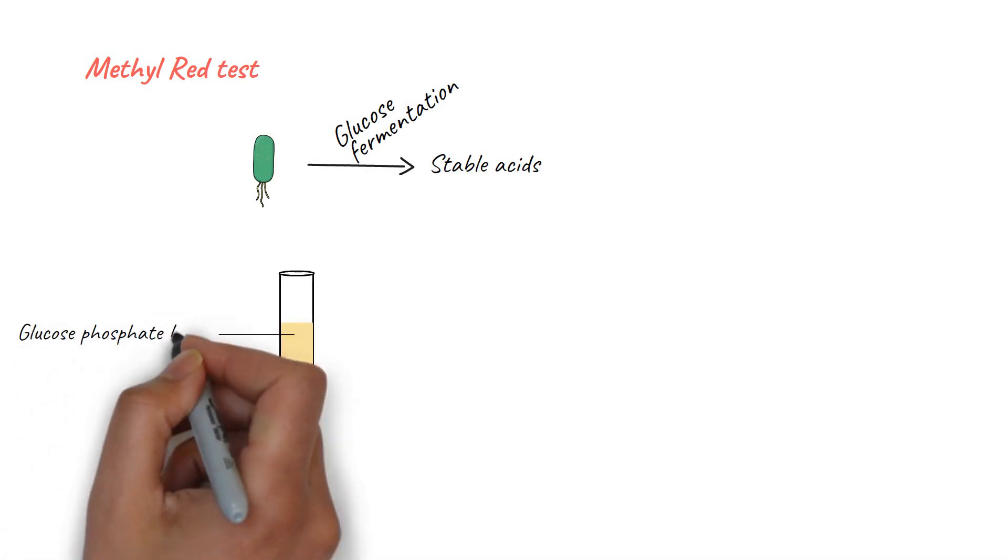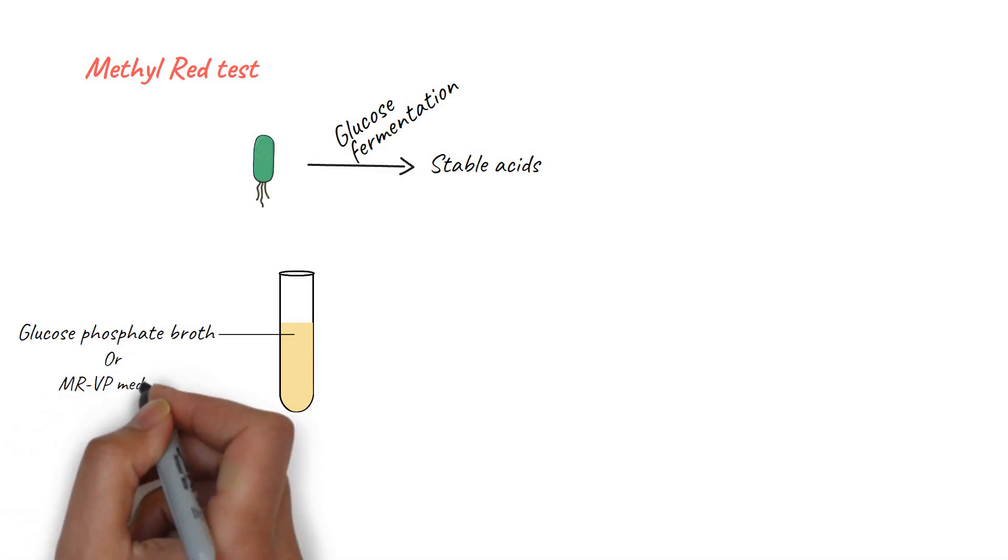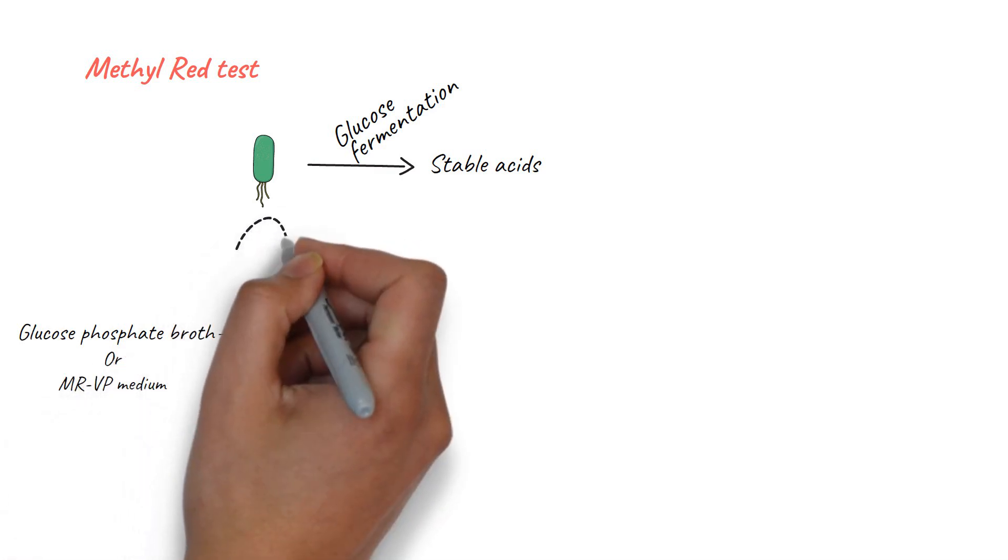The purpose of the methyl red test is to determine the ability of bacteria to produce and maintain stable acids from glucose fermentation. To perform this test, take a test tube containing glucose phosphate broth or MRVP medium. Inoculate the tube with a loopful of sample and incubate for 24 hours at 37 degrees Celsius.